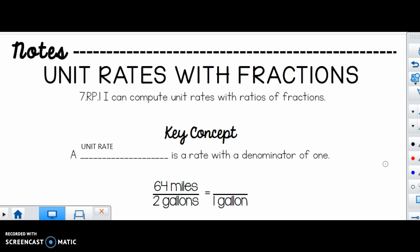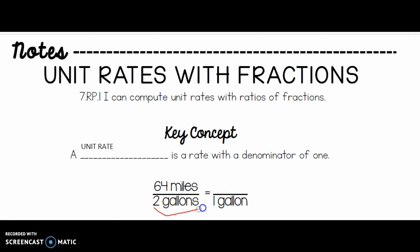Here's an example from last year. If we went 64 miles in two gallons and I wanted to find out how far we could go on one gallon, we used a little bit of the carrot method, if you will. So what did I have to do to the two to get it down to one? Well, I would divide that by two, and whatever I do at the bottom I have to do at the top in a proportional relationship. And I would get 32 miles.